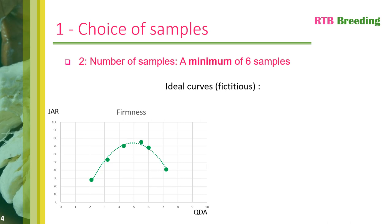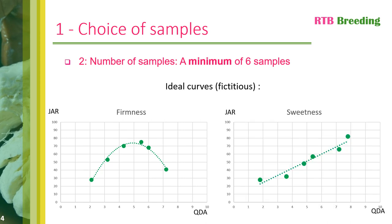On the graph to the right, for the sweetness attribute, we can see a straight line that illustrates the fact that the sweeter the product, the more consumers like it. These two examples are ideal and that's what we are trying to get as close to as possible.